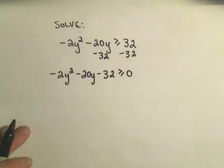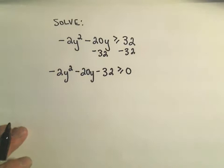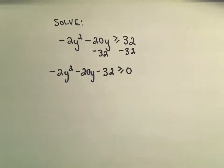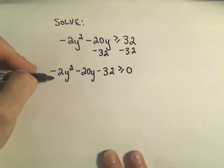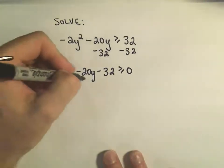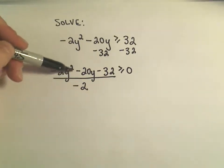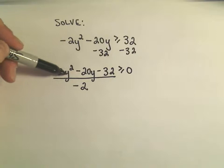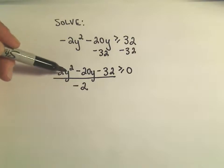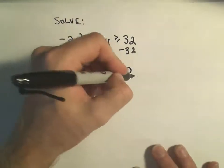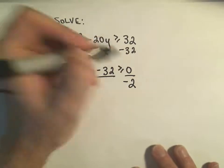One thing I'm going to do just to make the numbers a little bit easier to deal with — I notice that all of these are even. So I'm going to divide everything, not by positive 2, but by negative 2. The reason I'm going to do that is I like the coefficient on the y squared term to be a positive number. Since it's already negative, if I divide by a negative, that will make it into a positive number.